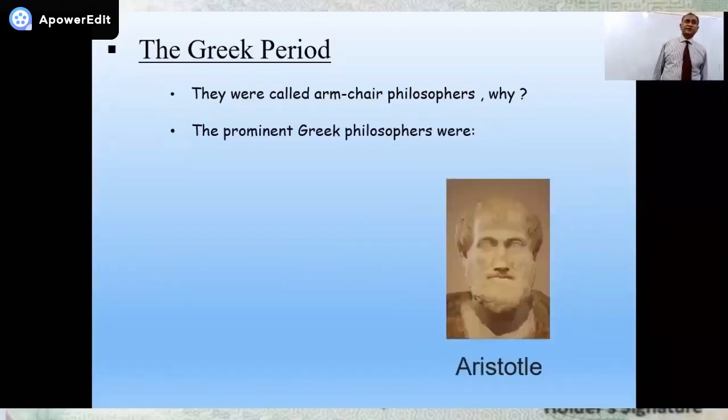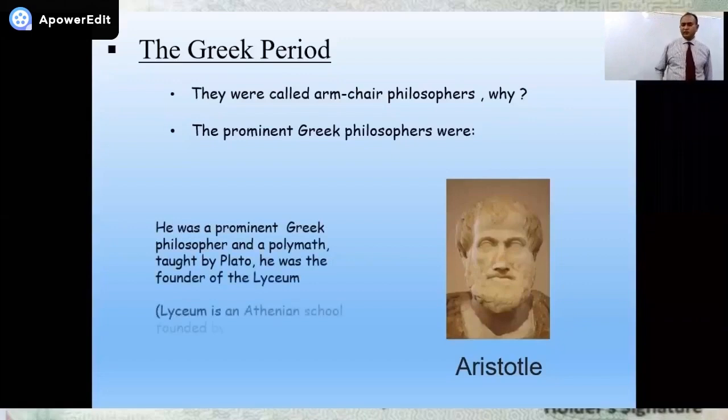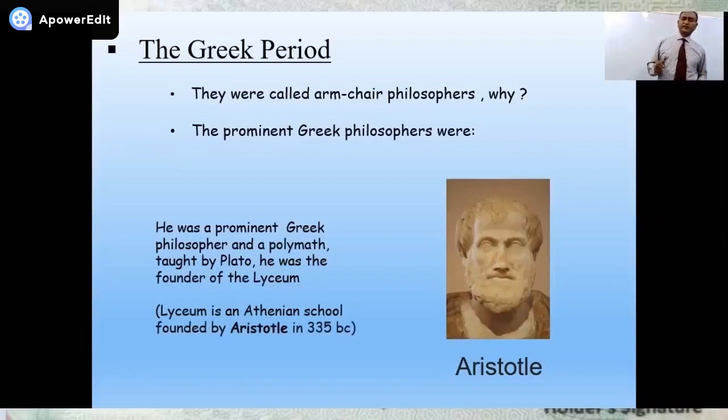Then, another one is Aristotle. Might we have heard his name. Again, he was a very prominent Greek philosopher. Polymath. Polymath means a very learned person who knows different skills, different areas of knowledge, etc. And he was the student of Plato. Aristotle was the student of Plato.